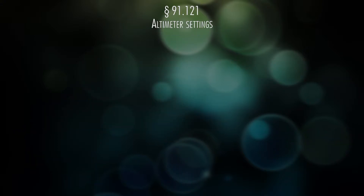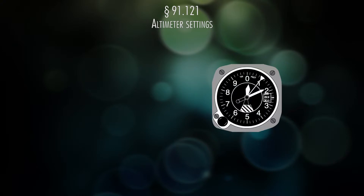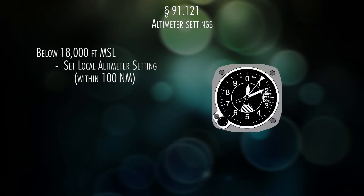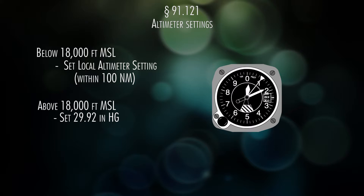91.121 talks about altimeter settings. When you're below 18,000 feet MSL, you set your altimeter to the current station or a station within 100 miles of you. Above 18,000 feet, you set it to 29.92.